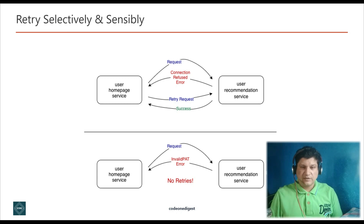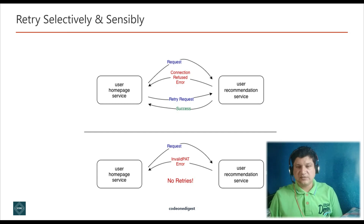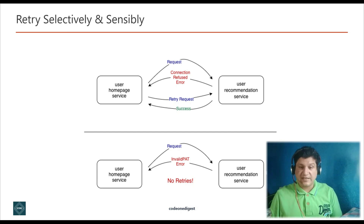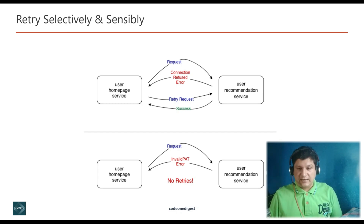We should perform retries only for selective calls — ideally only when there is a chance the request will succeed on re-attempt. For example, if the access token is invalid, there is no point in retrying. We should retry only when certain types of exceptions are raised, like connection refused or network errors. We must decide which errors to retry and which to skip.